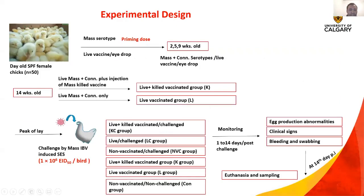Our experimental design: we conducted our experiment on 50-day-old SPF female chicks obtained from the Canadian Food Inspection Agency. We divided them into two groups — one group was mock vaccinated, and the other was vaccinated as follows. First, we primed the chicks with live attenuated vaccine containing mass serotypes at 1 day old. At 2, 5, and 9 weeks, we boosted them with three boosters of live attenuated vaccine containing mass serotypes. At 14 weeks old, the vaccinated group was divided into two groups: one vaccinated with live plus killed vaccine containing mass serotype, named the KC group, and the other vaccinated only with live attenuated vaccine, named the L group.